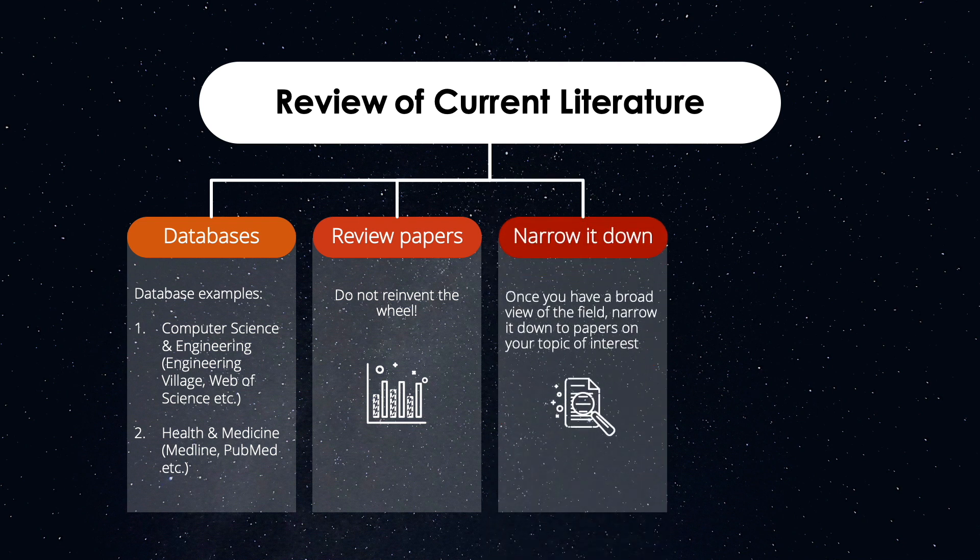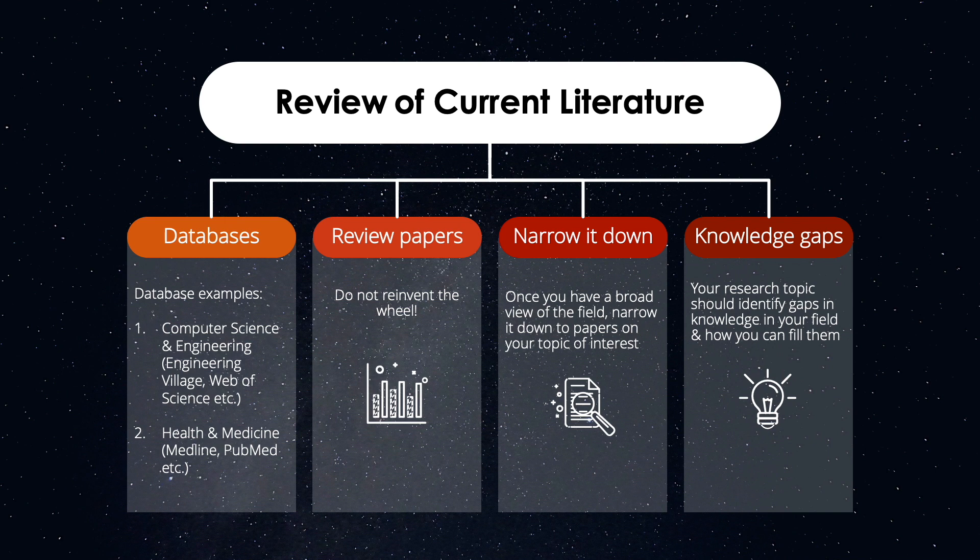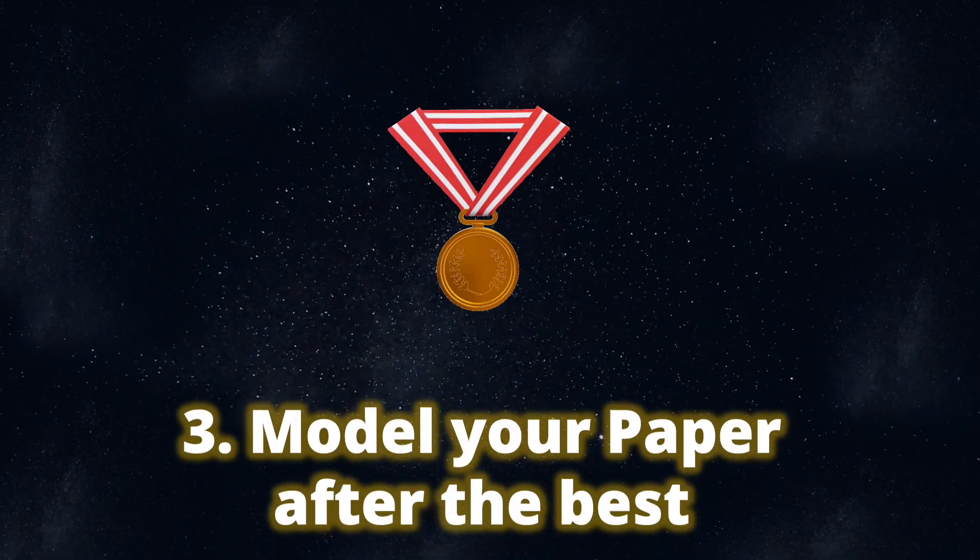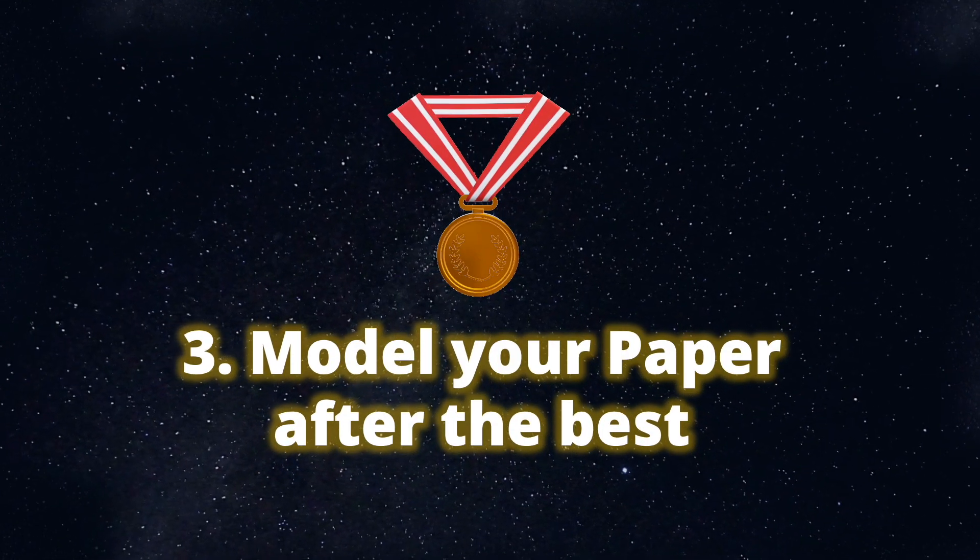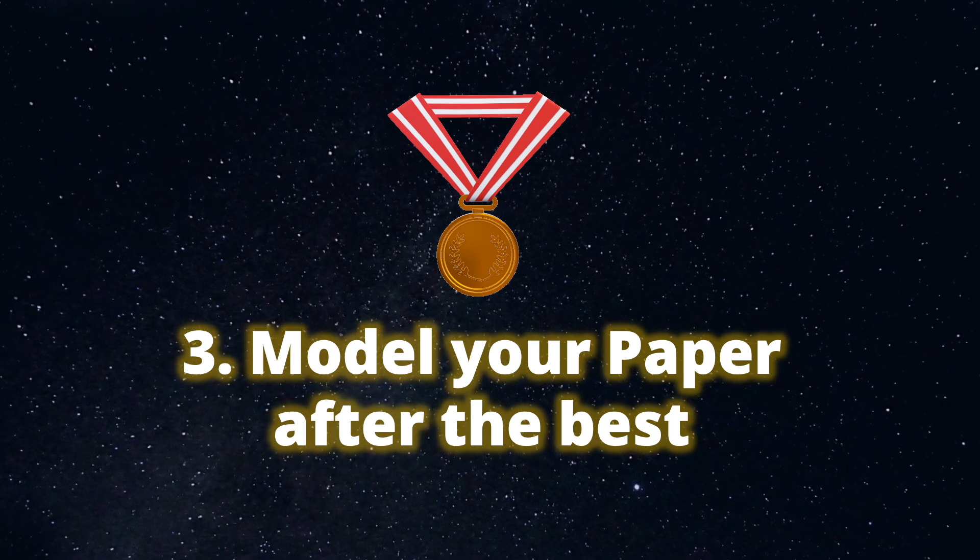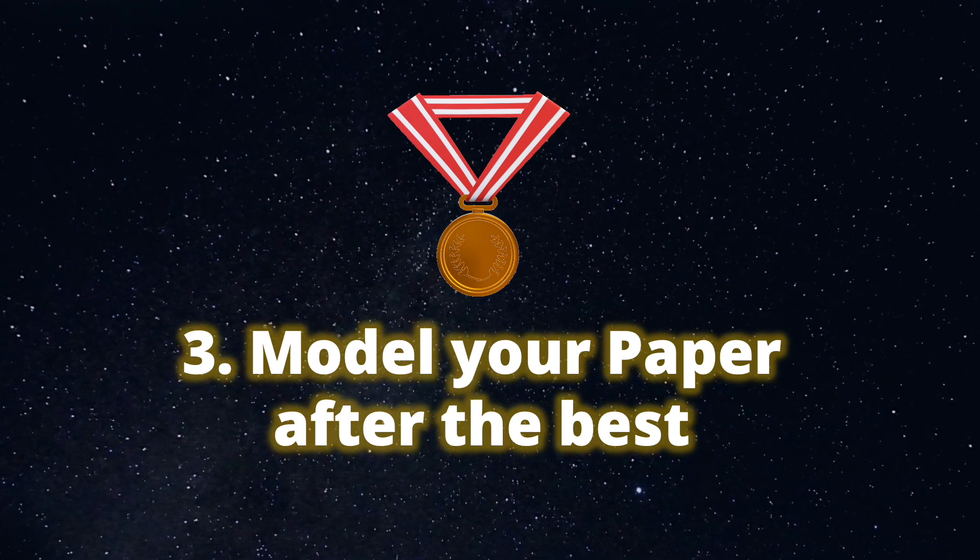The next step is to narrow down your research to the specific topic you are interested in. And finally, your goal is to identify areas where there is a gap in knowledge and identify how your research could contribute to filling that gap. Next, model your paper after the top articles in your field and journal of interest. The top articles are those which have the highest number of citations in your journal of interest or field.